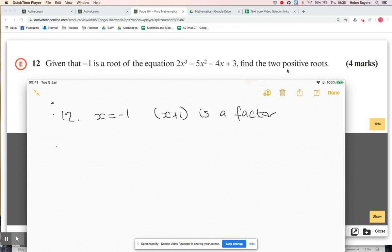The cubic is 2x³ - 5x² - 4x + 3. I know that x plus one is a factor, so I'm going to factorize it using inspection. The cubed term, 2x³, is going to come from x times the x² term in the quadratic. So that must be 2x², because that will give me 2x³.